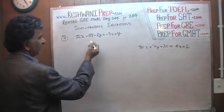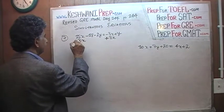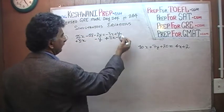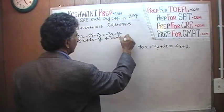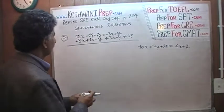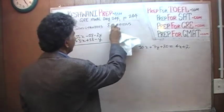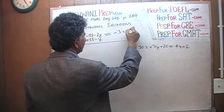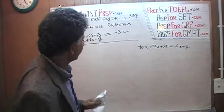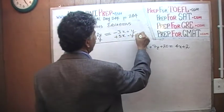I want to bring this negative 3X to this side, so let's add 3X to both sides. I want to bring the Y to the other side, so let's subtract Y from both sides. I want to bring the 18 to this side, so let's add 18 to both sides. So we have positive 3X and negative Y, and then we add 18 to both sides. The right-hand side has negative 3X and positive Y.